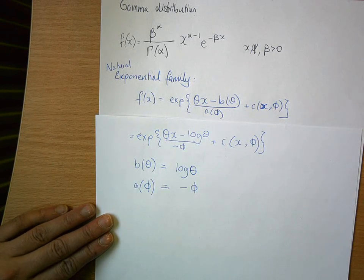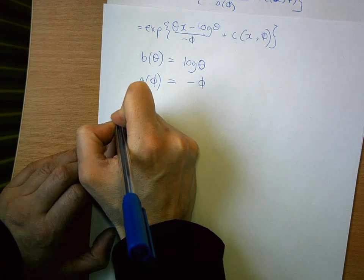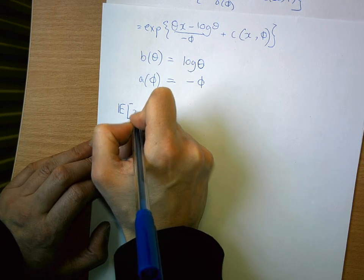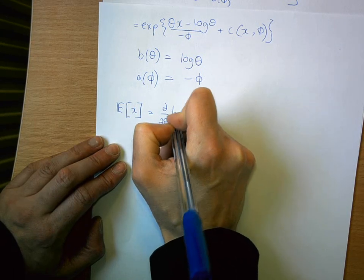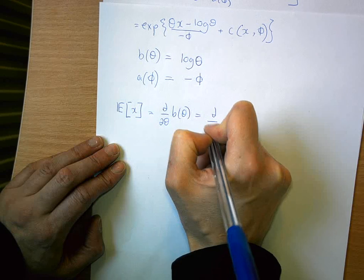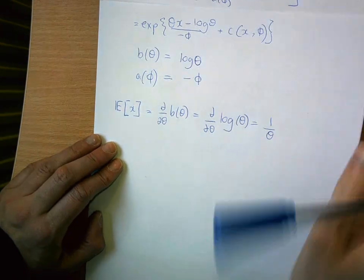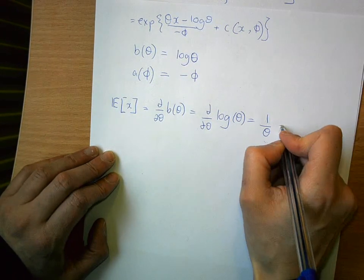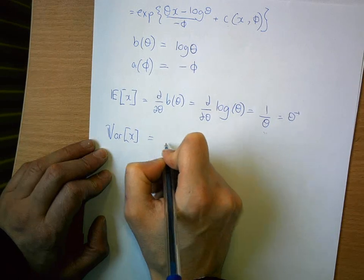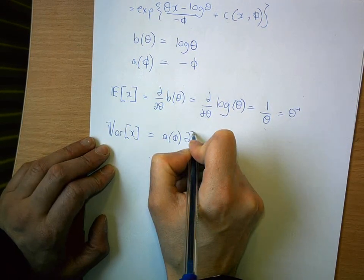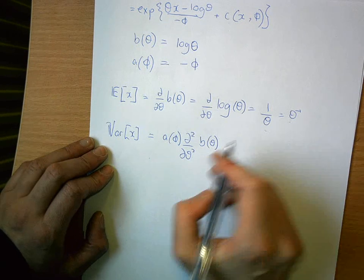What immediately follows is finding the expected value and variance. The expected value is the first derivative of b(theta) with respect to theta: d/dθ of log(theta) = 1/theta = theta^(-1). Keep these in terms of theta for now. The variance of x is a(phi) times the second derivative of b(theta) with respect to theta — this is why it's important to keep things in terms of theta.